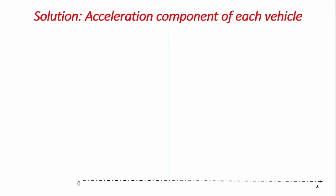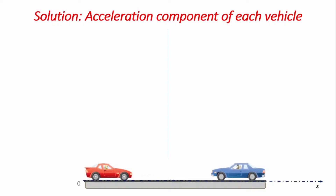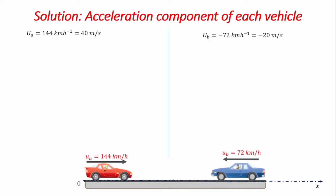To walk through this problem, let's set up our coordinate system along the x direction. Initially, vehicle A was at the origin point zero, moving at 144 kilometers per hour in the positive x direction, which converts to 40 meters per second in SI units. The second vehicle was moving in the opposite direction at 72 kilometers per hour, giving us minus 20 meters per second since it moves away from the positive x axis.